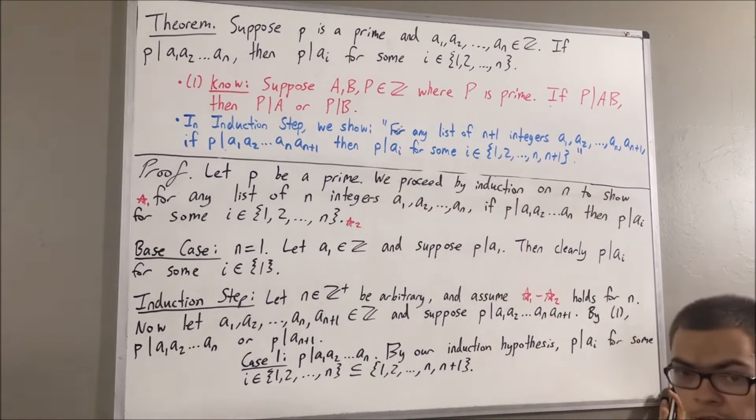Now let's move on to the case where p divides an+1. Well, in this case, this is obvious, right? p divides ai for some integer i between 1 and n plus 1 — namely, we just take i to be n plus 1. So, we have proven that this is true, and therefore we have proven this entire statement. And that's exactly what we wanted to prove in order to complete the induction step. So, this closes the induction.